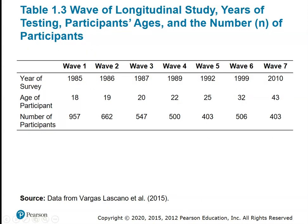An example is a study by Vargas-Lasko and colleagues in 2015. Participants were 18 years old in 1985, and followed up to age 43 in 2010. The big problem illustrated here is the number of participants: 957 in 1985, slowly decreasing through the waves. By wave five it drops to 403, and by the end — 25 years from 1985 — we've lost more than half our subjects, which may or may not be a problem. The difficulty is we just don't know, and it tends to call our results into question.